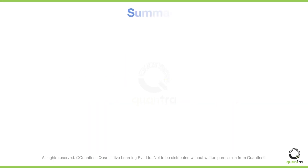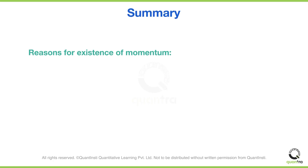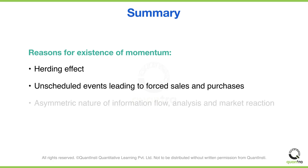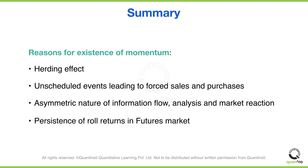To summarize, let's go over the reasons for the existence of momentum. One common cause is the herding effect. Another reason is unscheduled events leading to forced sales and purchases. Momentum also develops due to the asymmetric nature of information flow, analysis, and market reaction. And finally, the persistence of roll returns causes momentum in the futures market. That's all for this video.